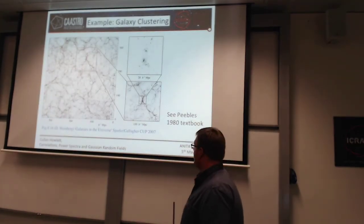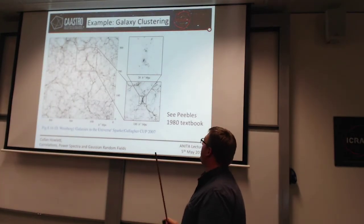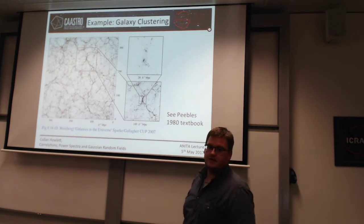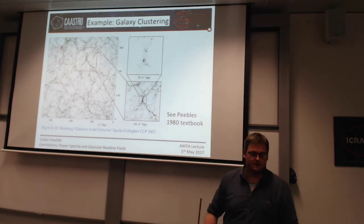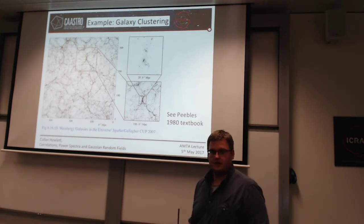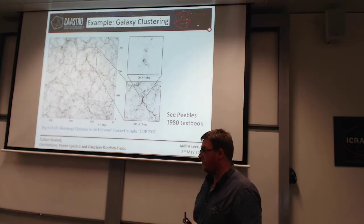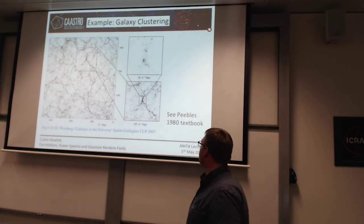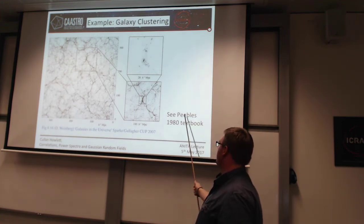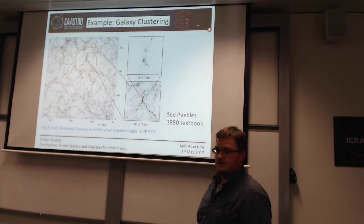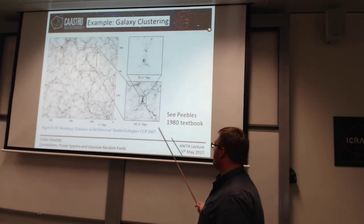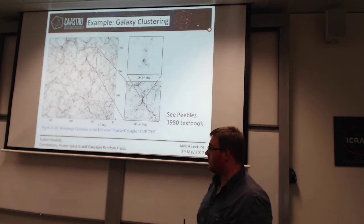Now I'm going to go into an example of how to compute correlation functions, sticking with galaxy clustering — though this applies to any case where you want to look at the correlation between two things. For a good reference, this is a Peebles textbook from 1980, which is now 40 years old but still the benchmark for understanding correlations.